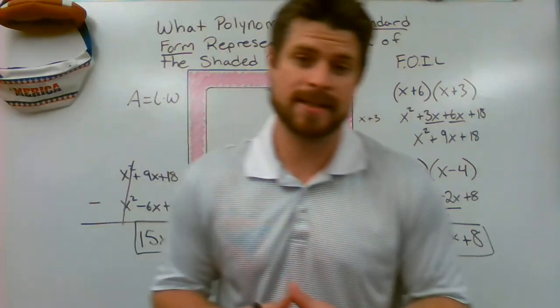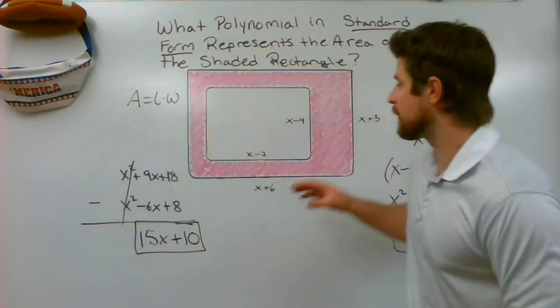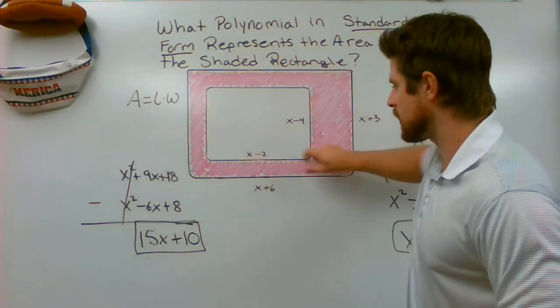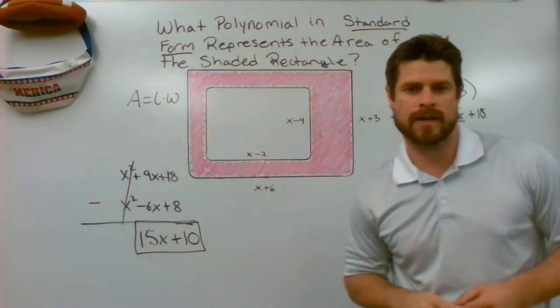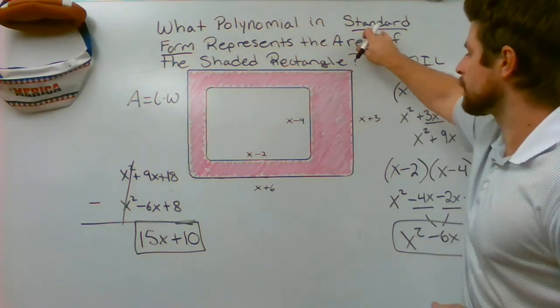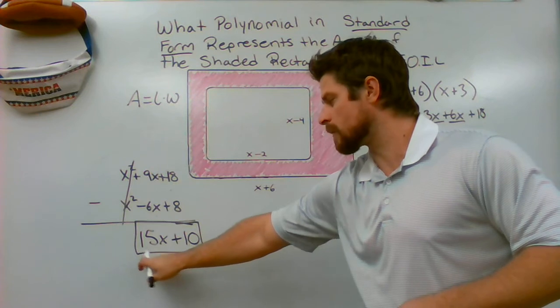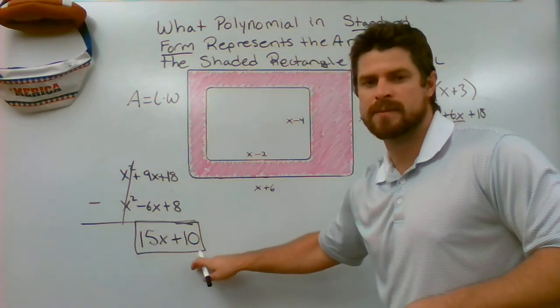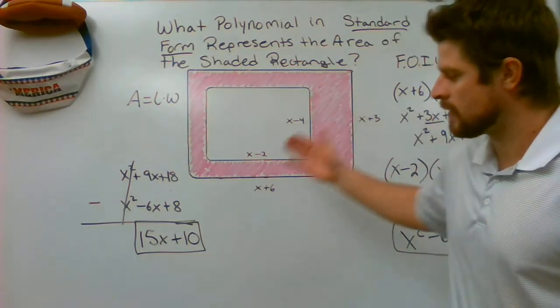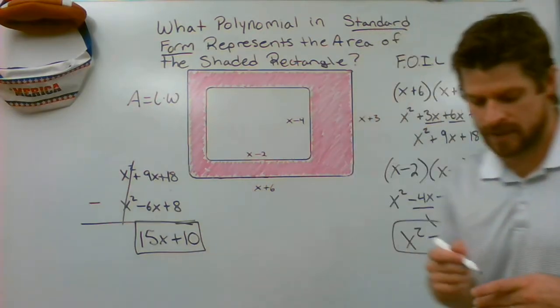15X plus 10 is going to represent the area that I have for this pink shaded area of the large rectangle. So what polynomial in standard form, standard form, because 15X comes before the constant of 10, represents the area of the shaded rectangle. There we have it.